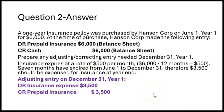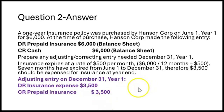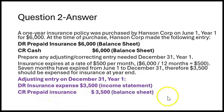Don't be afraid to use finger math and count — June, July, August, September, October, November, December — that's seven months. So $3,500 should be expensed for insurance at year end. The adjusting entry December 31st, year one: debit insurance expense $3,500, credit prepaid insurance $3,500. One income statement account, one balance sheet account. That's our adjusting entry.